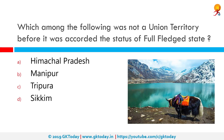Which among the following was not a union territory before it was accorded the status of a full-fledged state? The correct answer is Sikkim. On 16 May 1975, Sikkim became the 22nd state of the Indian Union and the monarchy was abolished.